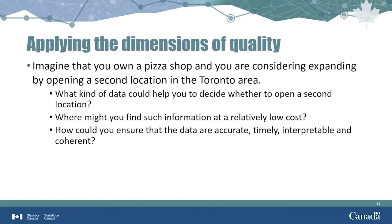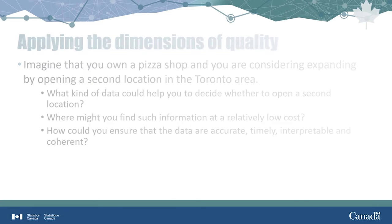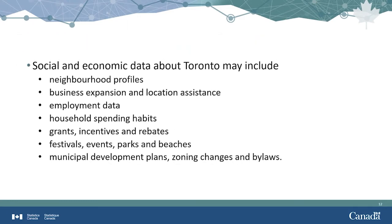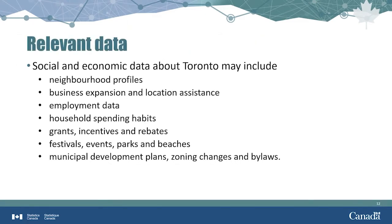Imagine that you own a pizza shop, and you are considering expanding your business by opening a second location in the Toronto area. What kind of data could help you make your decision, and where might you find such information? Opening a second location in Toronto would require social and economic data about the city, including neighborhood profiles, business expansion and location assistance, employee data and household spending habits, grants, incentives, and rebates, festivals, events, parks, and beaches, and municipal development plans.